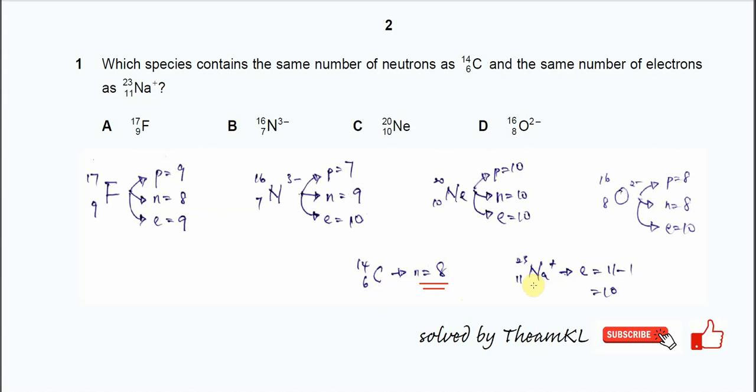Sodium ion, because it's charged positive, so we just need to use the proton number minus 1, so we will get the electron number which is 10.